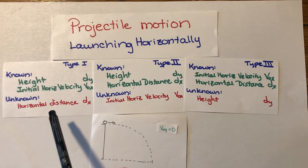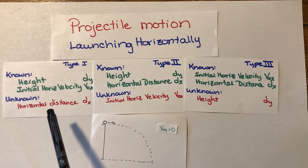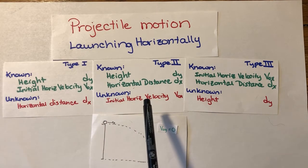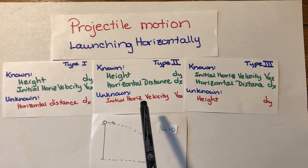So far, we've talked about when we know height and initial horizontal velocity but we don't know the initial horizontal distance. We've talked about height and horizontal distance as our knowns, but we don't know the initial horizontal velocity.